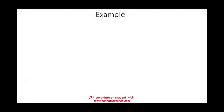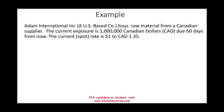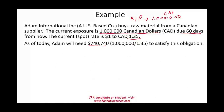Now a simple example: Adam International Inc., a U.S.-based company, buys raw materials from a Canadian supplier. The current exposure is 1 million Canadian dollars — an accounts payable denominated in Canadian dollars — due in 60 days. Today's spot rate is 1.35, meaning if Adam paid today, they would pay $1,000,000 ÷ 1.35 = approximately $740,740 U.S. dollars.